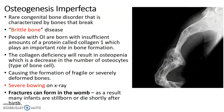Osteogenesis imperfecta, sometimes abbreviated OI or called brittle bone disease, is a rare congenital bone disorder characterized by bones that break extremely easily. People with OI are born with insufficient amounts of collagen 1, which plays an important role in bone formation. They may actually have fractures in the womb before they're even born. Many infants are stillborn or die shortly after birth, depending on the severity of OI.